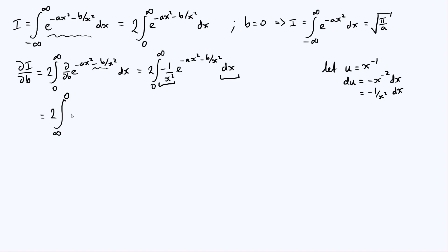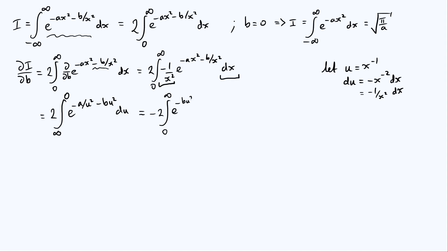Looking at the integrand after substitution: the exponential becomes e to the minus a over u squared minus b u squared, since x equals one over u. The minus one over x squared and dx combine to give just du. Flipping the limits introduces a minus sign, giving two times the integral from zero to infinity of e to the minus b u squared minus a over u squared du. Notice this looks quite similar to what we started with — it's just that b and a are flipped around, and u is a dummy variable so that doesn't matter.